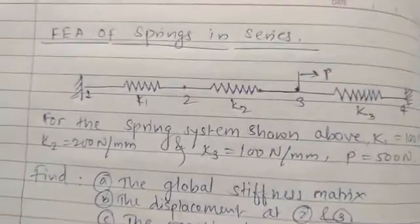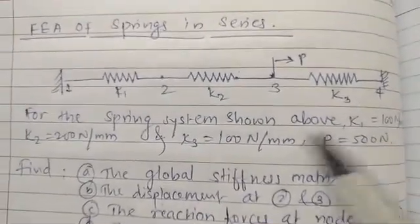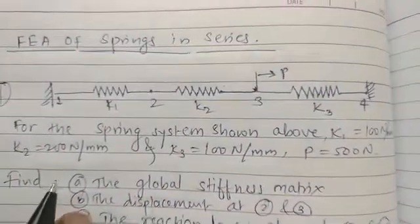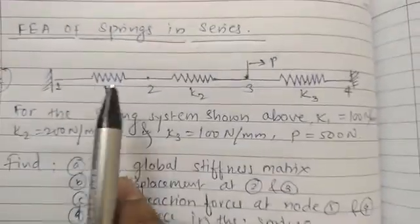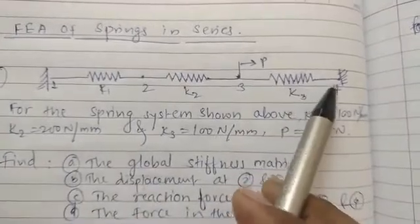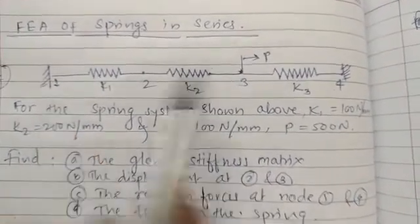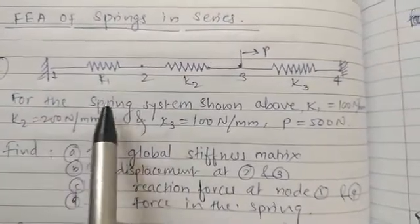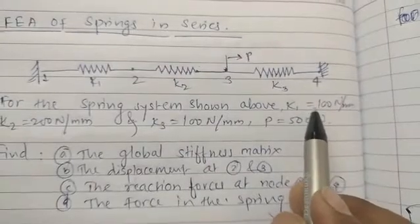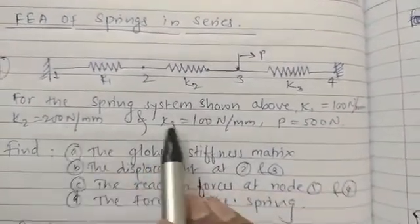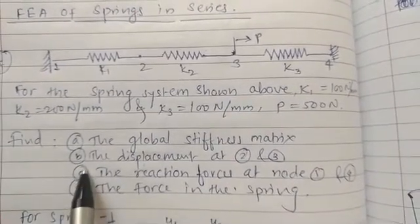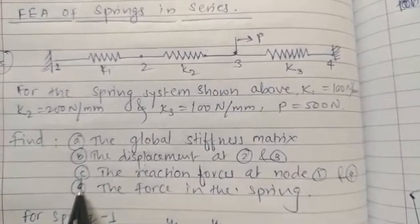Welcome friends. In this video we'll discuss the finite element analysis of springs in series, and we'll solve one numerical. We have three springs in series with fixed support at nodes 1 and 4. The problem statement: for the spring system shown, k1 is 100, k2 is 200, and k3 is 100. We are asked to find the global stiffness matrix, displacement at nodes 2 and 3, and reaction force at nodes 1 and 4.